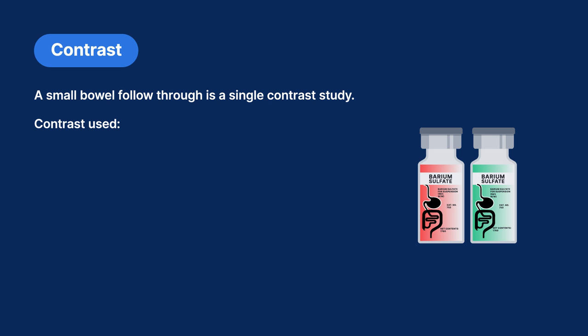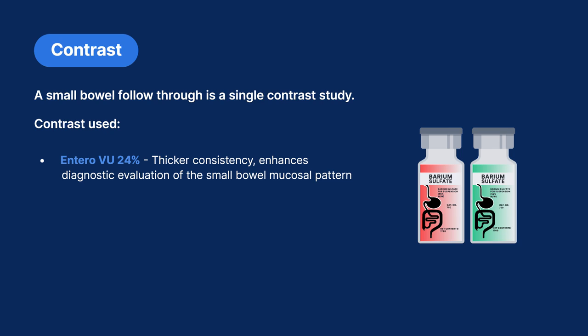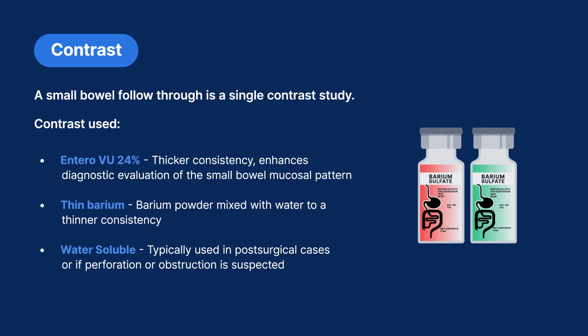A small bowel follow-through is a single contrast study. Contrast options include EnteroVU 24%, which is a thicker consistency that enhances diagnostic evaluation of the small bowel mucosal pattern. Thin barium can be used, which is a powder mixed with water to the needed consistency. Water-soluble contrast can also be used, typically in post-surgical cases or if perforation or obstruction is suspected. Water-soluble contrast can be absorbed by the body, so if there is a perforation and the contrast leaks into the peritoneum, the body can absorb it, or it can be easily removed and aspirated from the bowel prior to surgery. Whereas if barium leaks into the peritoneum, it is difficult to remove and the body does not absorb it.